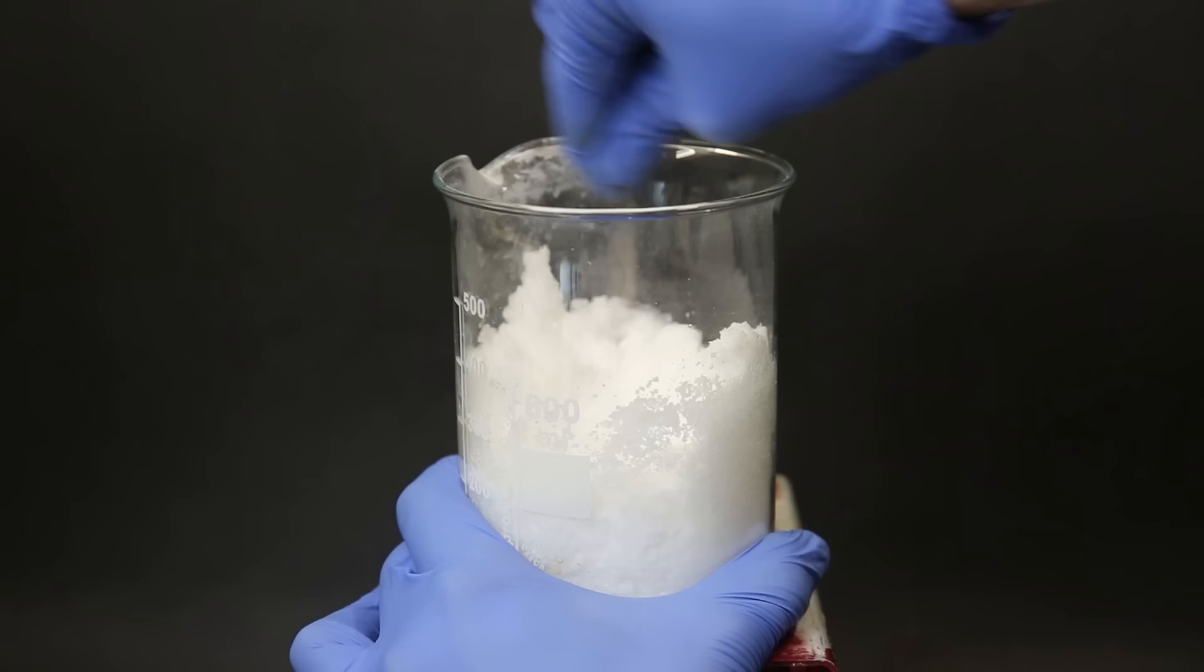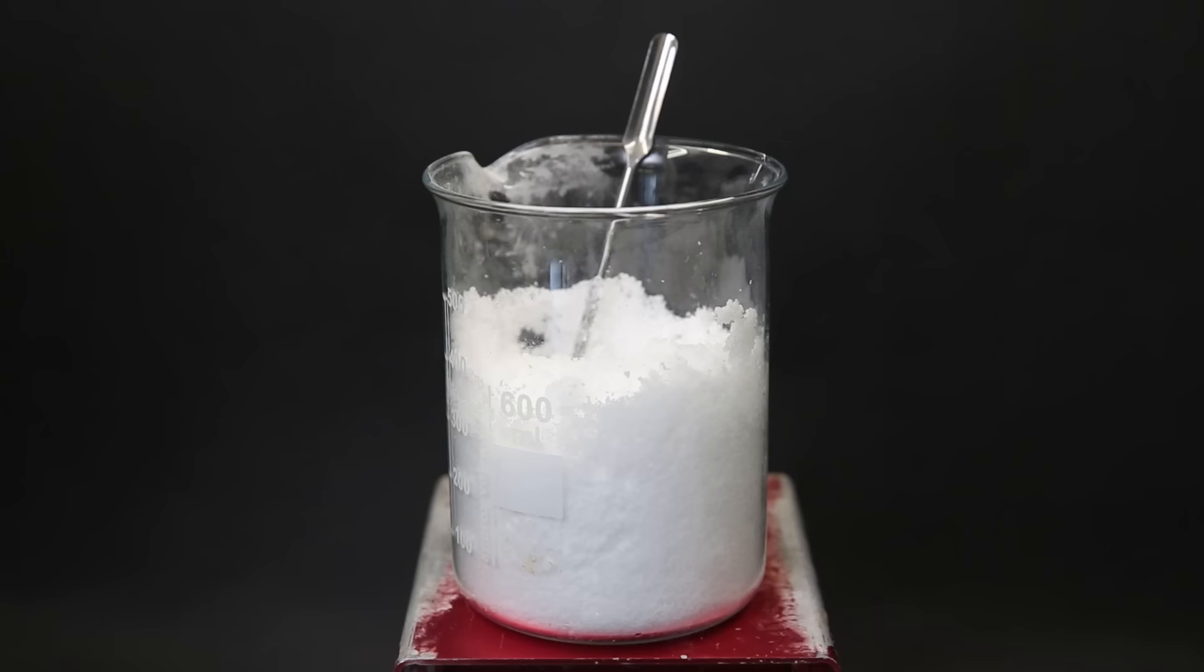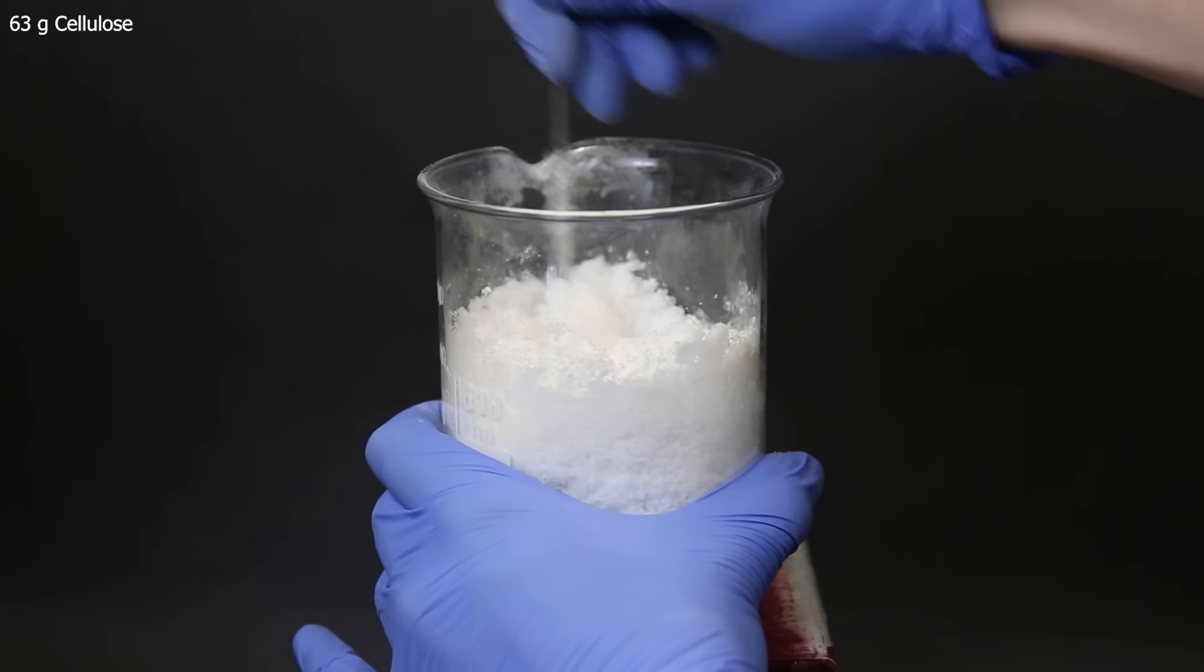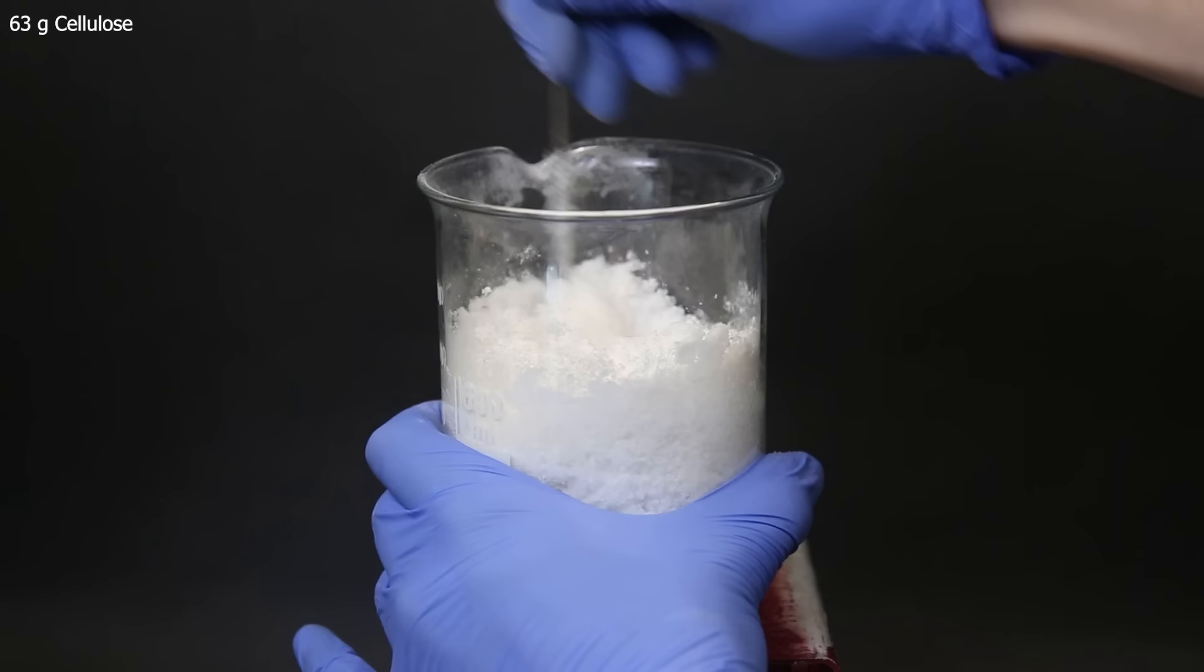When it has been mixed, I leave it for a while so that all of the methanol evaporates. And then I add 63g of cellulose powder. I add it in portions and mix it around so that all of the cellulose is spread evenly.